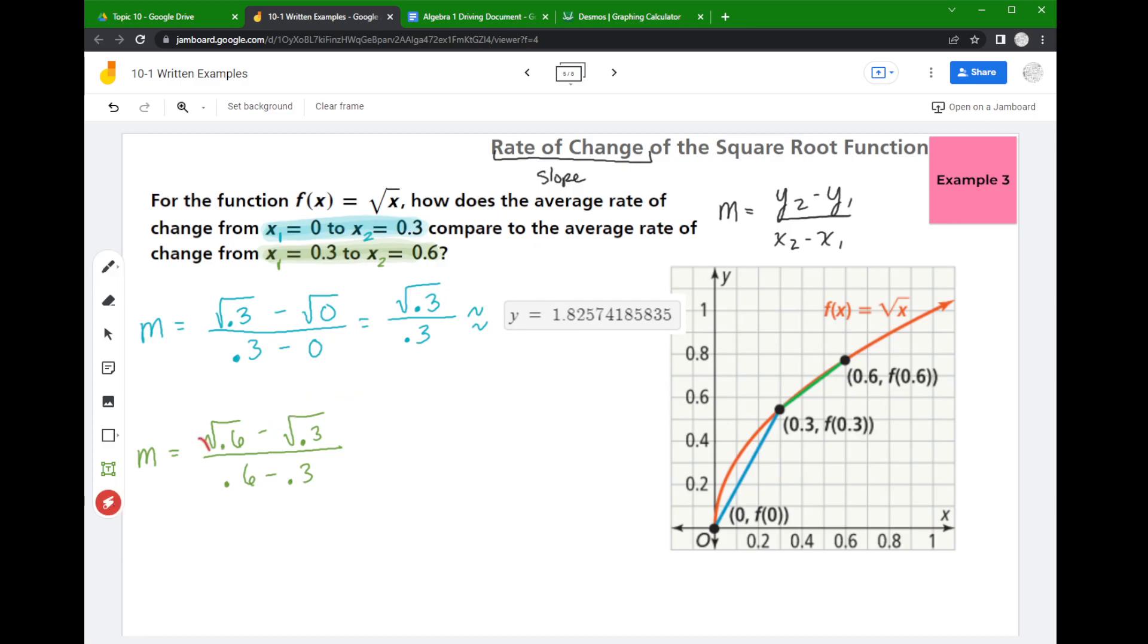And then my x1 was 0.3, so I plug into the function and get the square root of 0.3. Now notice these are two separate square roots. You cannot just put a mega square root there—that doesn't work. They're not equivalent.